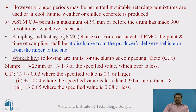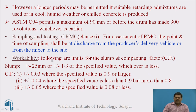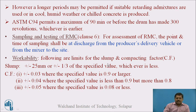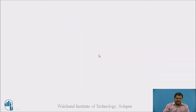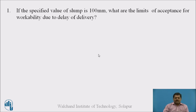Next is Sampling and Testing of RMC, Clause 6. For assessment of ready-mixed concrete, the point and time of sampling shall be at the discharge from the producer's delivery vehicle or from the mixer to the site. The workability requirement for slump and compaction factor gives a tolerance of plus or minus 25mm, or plus or minus one-third of the specified value, whichever is applicable.